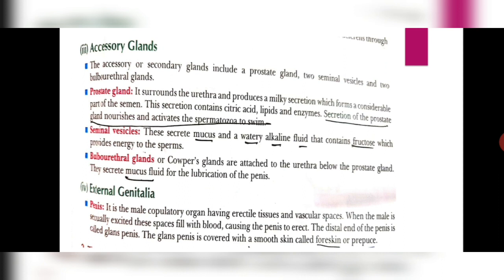The next glands are the seminal vesicles. The seminal vesicles secrete a mucousy and watery alkaline fluid which contains fructose, providing energy to the sperms. Fructose provides a very easy and good source of energy as it can be directly entered into glycolysis for further breakdown and production of energy. Last are the bulbourethral glands or Cowper's glands, attached to the urethra just below the prostate gland. They are not responsible for any secretion into the semen but secrete a mucousy fluid for lubrication of the penis during copulation.